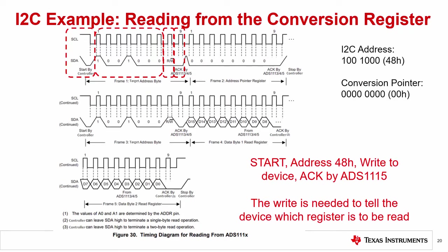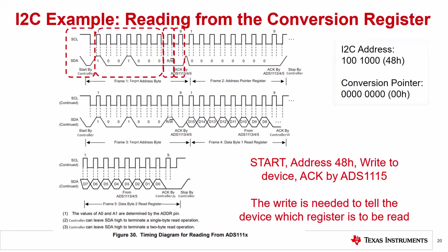Figure 30 in the ADS-1115 datasheet shows a generic diagram for reading from the device. Again, we'll use the settings that we've previously discussed to show exactly what we need to read from the conversion register. For reference, we'll put up the address and the register pointer that we need on the right side of the slide. First, the I2C write starts with a start condition. SDA is pulled low, and then SCL is pulled low. Then we write to the I2C address. With the ADDR pin connected to ground, we use an address of 1001000, or 0x48 in hexadecimal. We need to tell the device which register we need to read from.